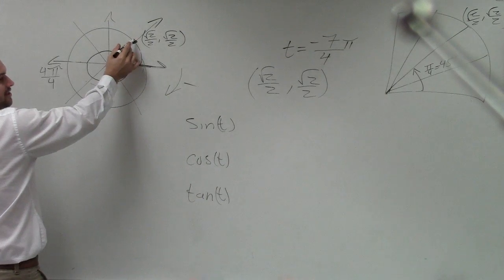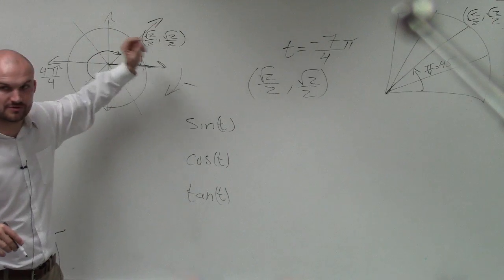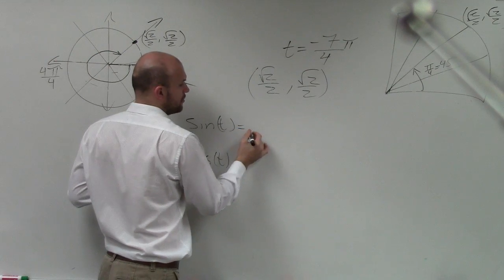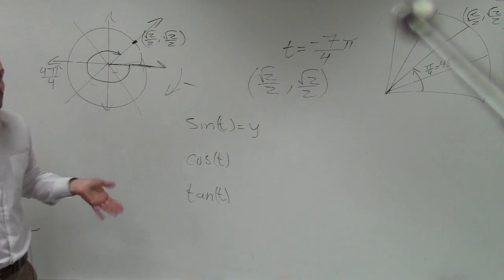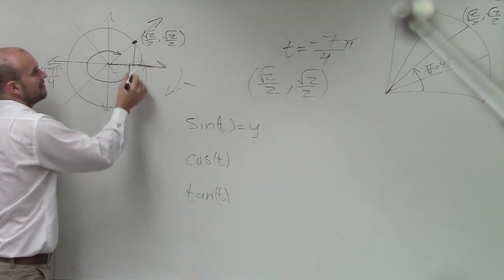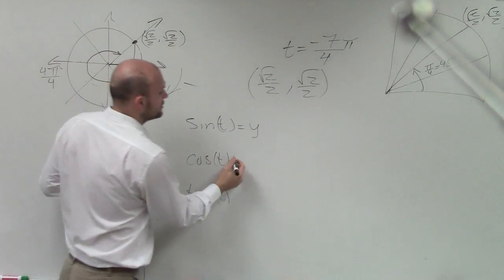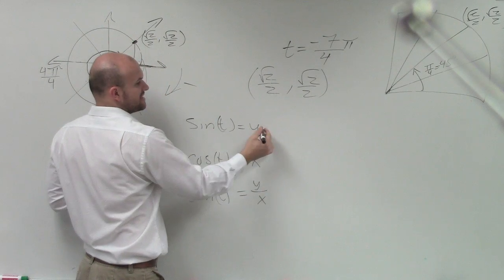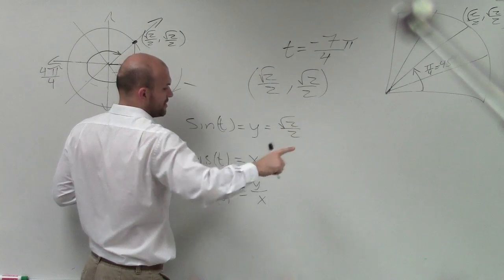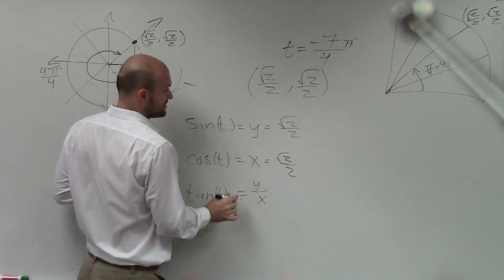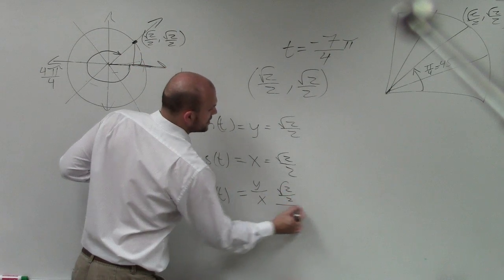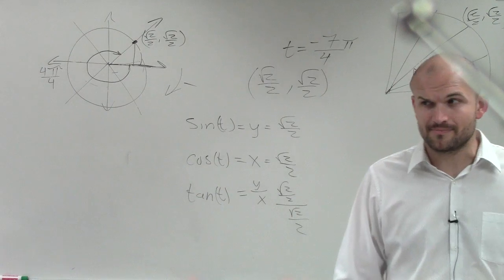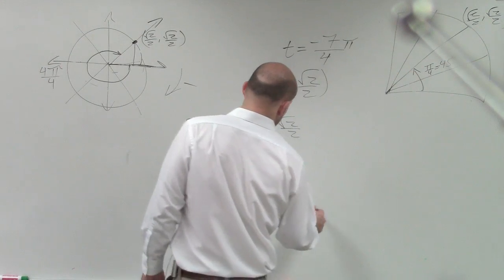This ray would intersect the unit circle at the point square root of 2 over 2, comma, square root of 2 over 2. Since this point is on the unit circle, the sine of this angle is equal to y — because sine represents opposite over hypotenuse, and the hypotenuse is 1, so it's just y. The cosine is equal to the x-coordinate, and the tangent is equal to y over x. So our sine is √2/2, our cosine is √2/2, and our tangent is (√2/2) divided by (√2/2), which equals 1.